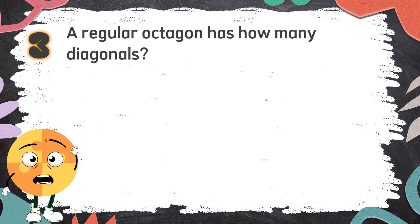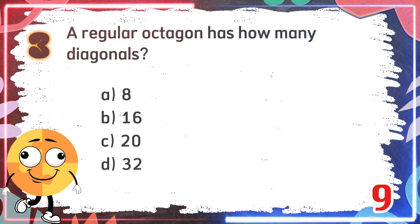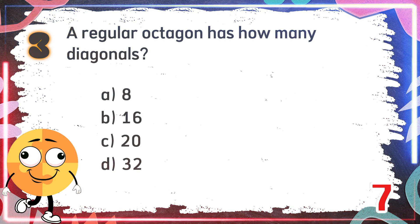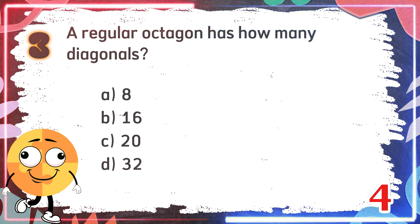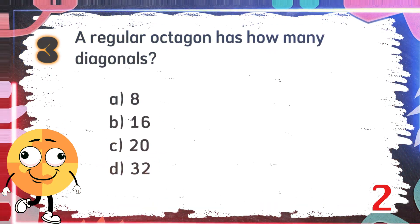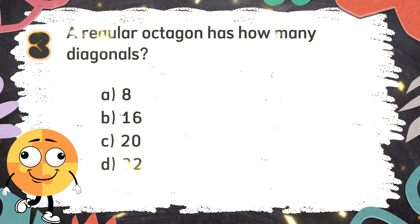Number 3: A regular octagon has how many diagonals? The choices are: A. 8, B. 16, C. 20, D. 32. The correct answer is C, 20.